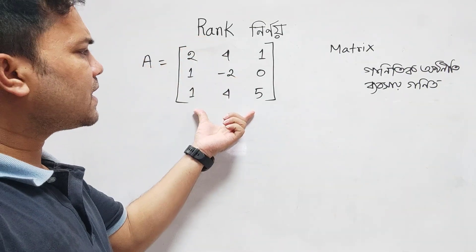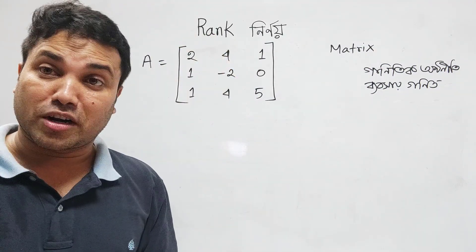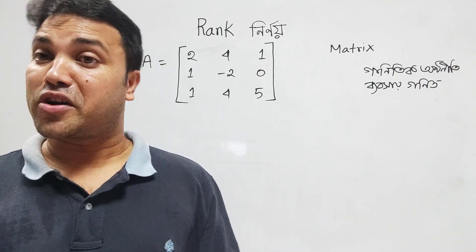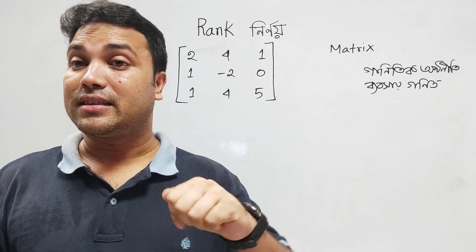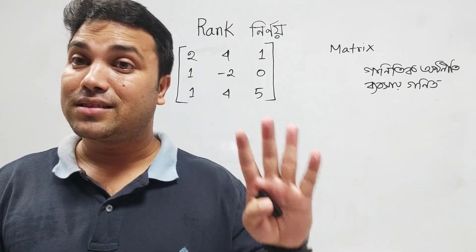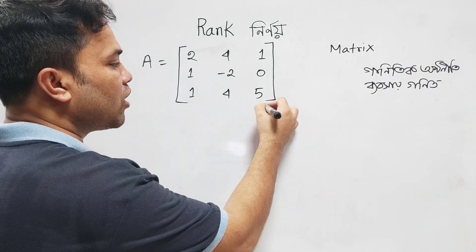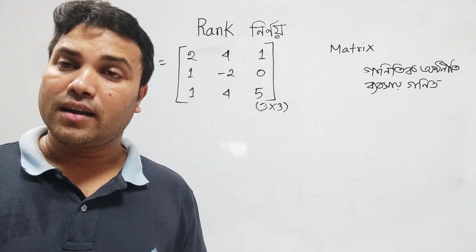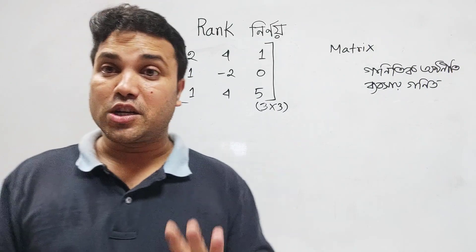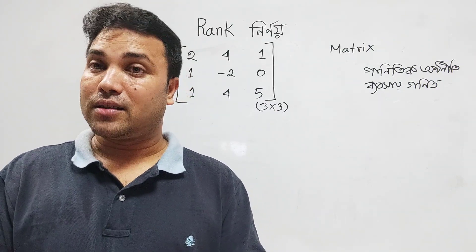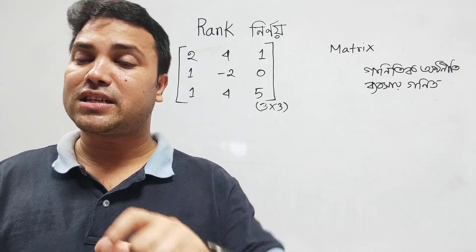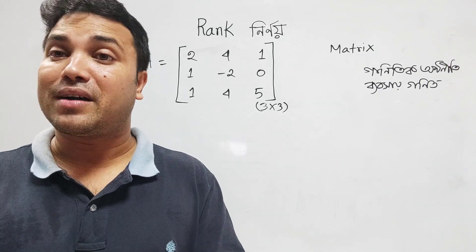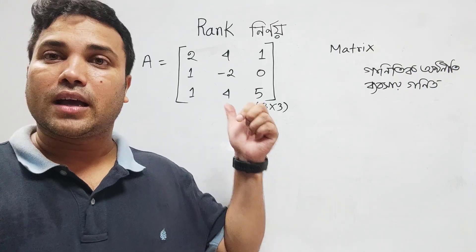Now let's see that matrix A has a rank. A matrix is made up of columns. If you look at the matrix, this is a column, and this is a column, and this is a column. You can see the matrix and if you think that this matrix is a column — the matrix is a column.